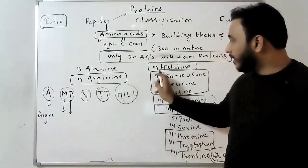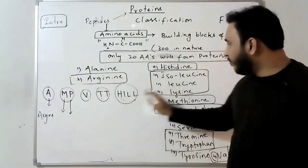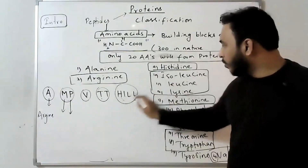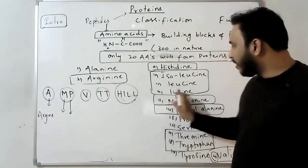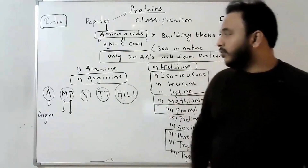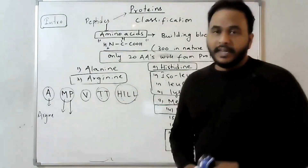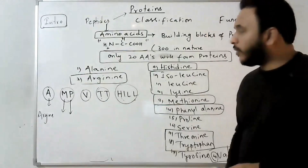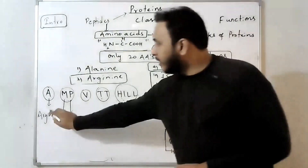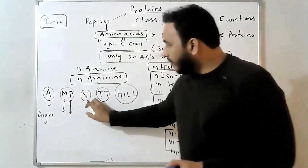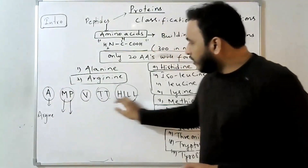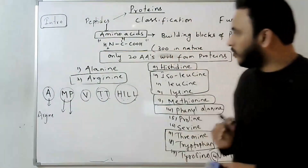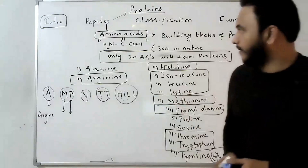H for histidine, I for isoleucine, L for lysine. So to remember essential amino acids: 'Andhra M P visited Thirumala, Thirupati, Hill.' Very simple to remember.